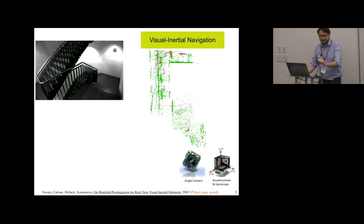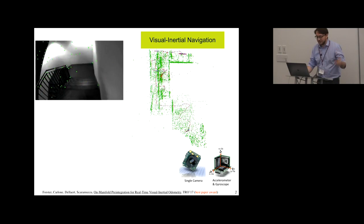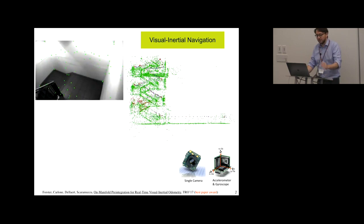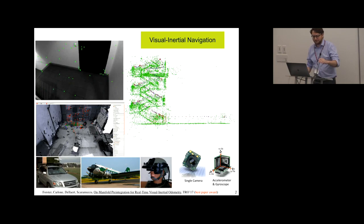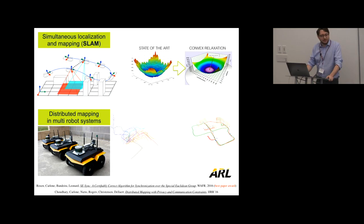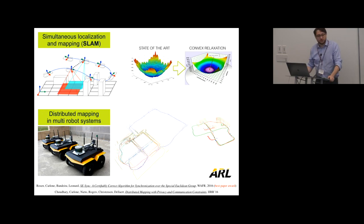Here's an example of recent work we did on 3D mapping using a camera and inertial measurement unit. Over the years I've implemented this technology on several platforms — from small drones to self-driving cars, airplanes, and helmets. I've also been fascinated by the mathematical aspects of perception and SLAM, including theoretical underpinnings and real implementations with multi-robot systems, in collaboration with the ARM research lab.